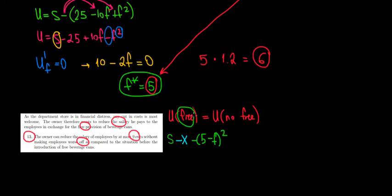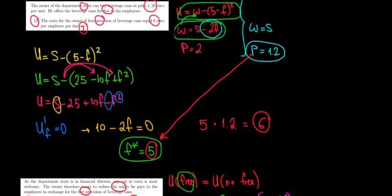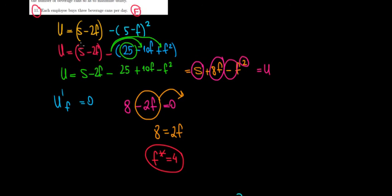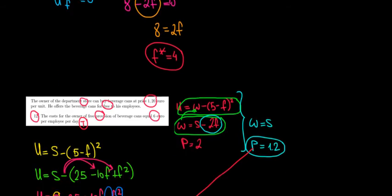This would be the utility with free coffee. What would be the utility of having no free coffee? Let's write it over here. Well, that would be S minus 2F. That is the wage. Let's just check it over here. The utility of no free coffee: S minus 2F and then minus 5 minus F to the power of 2. So we write that as well. Minus 5 minus F to the power of 2.